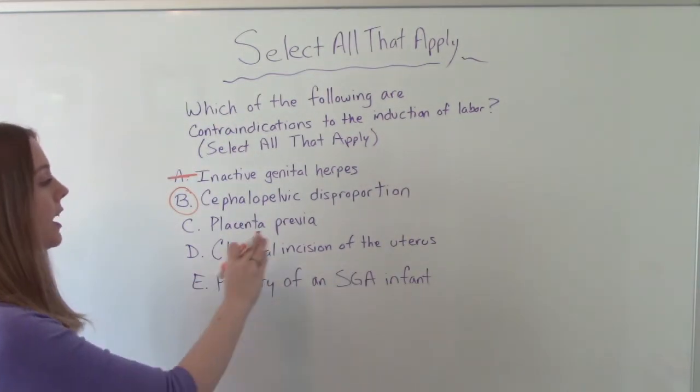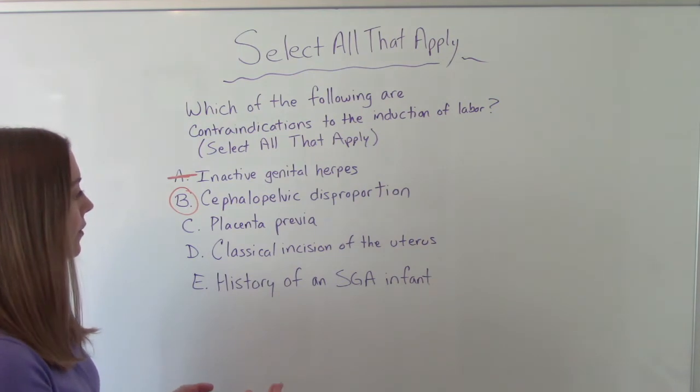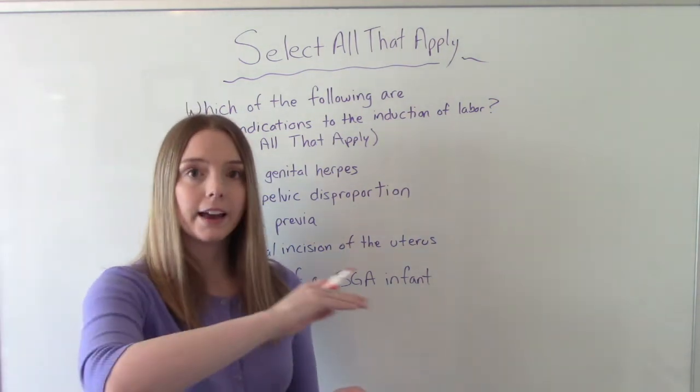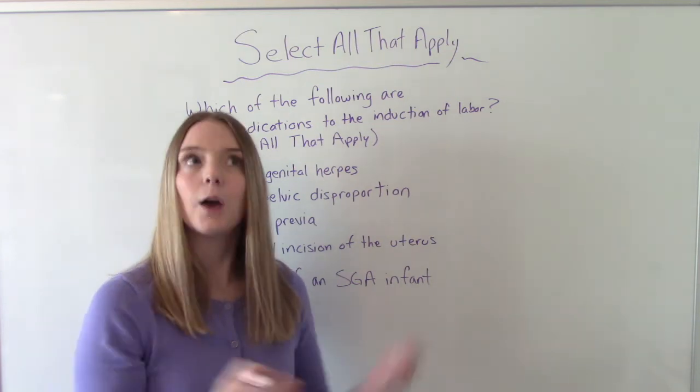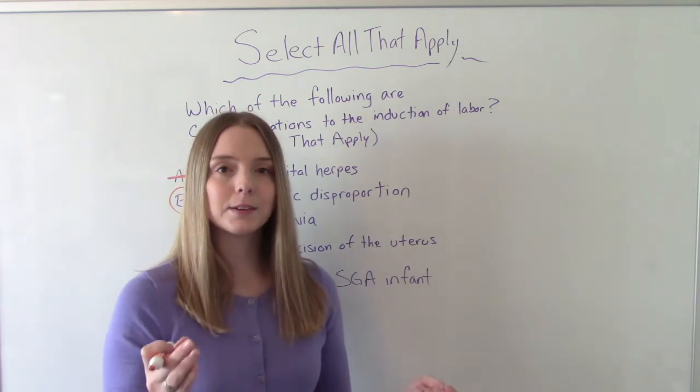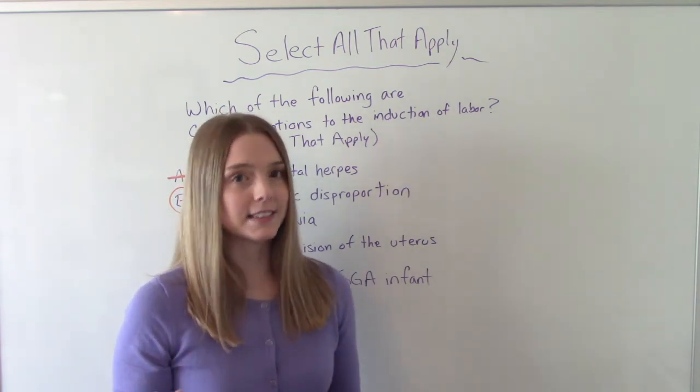C, placenta previa. So what is a placenta previa? A placenta previa is when the placenta is implanted over the cervical os. And we already know, because we know a lot of content and knowledge, that a person who has a placenta previa has to have a c-section, right?